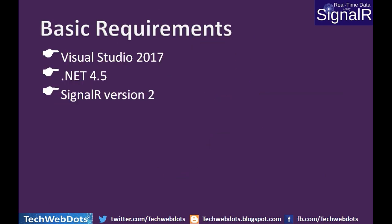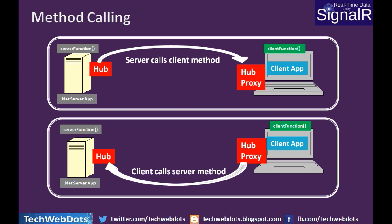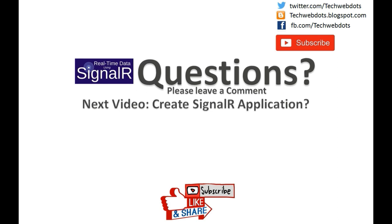What are the basic requirements for using SignalR? Visual Studio 2017, .NET Framework 4.5, and SignalR version 2 are required. You can use older versions of SignalR as well. I will paste all the important links related to SignalR and Blazor in the description of this video. If you have any questions, please leave a comment — I will reply as soon as possible. My next video will be creating a SignalR application based on the things we have discussed. Thanks for watching, have a good day!